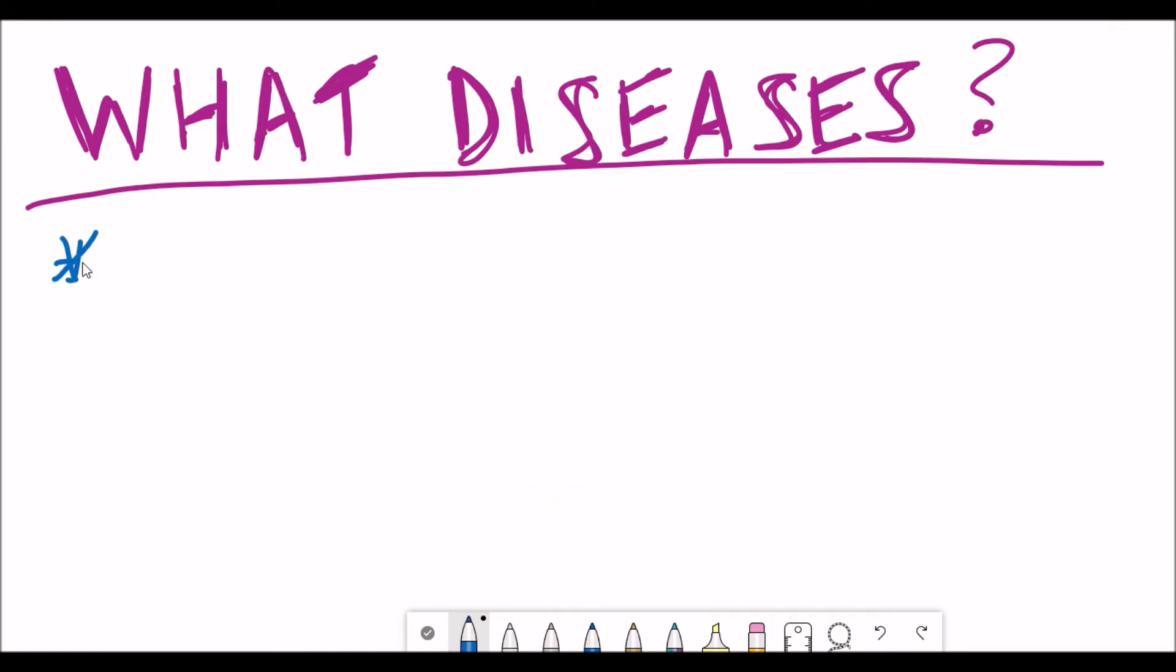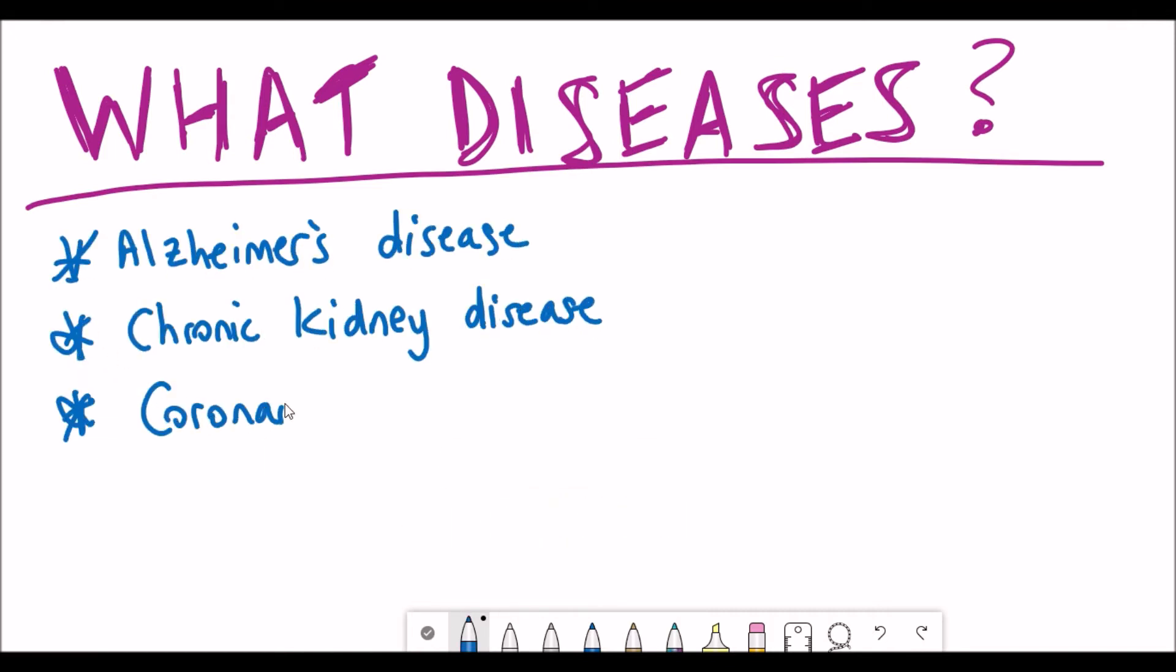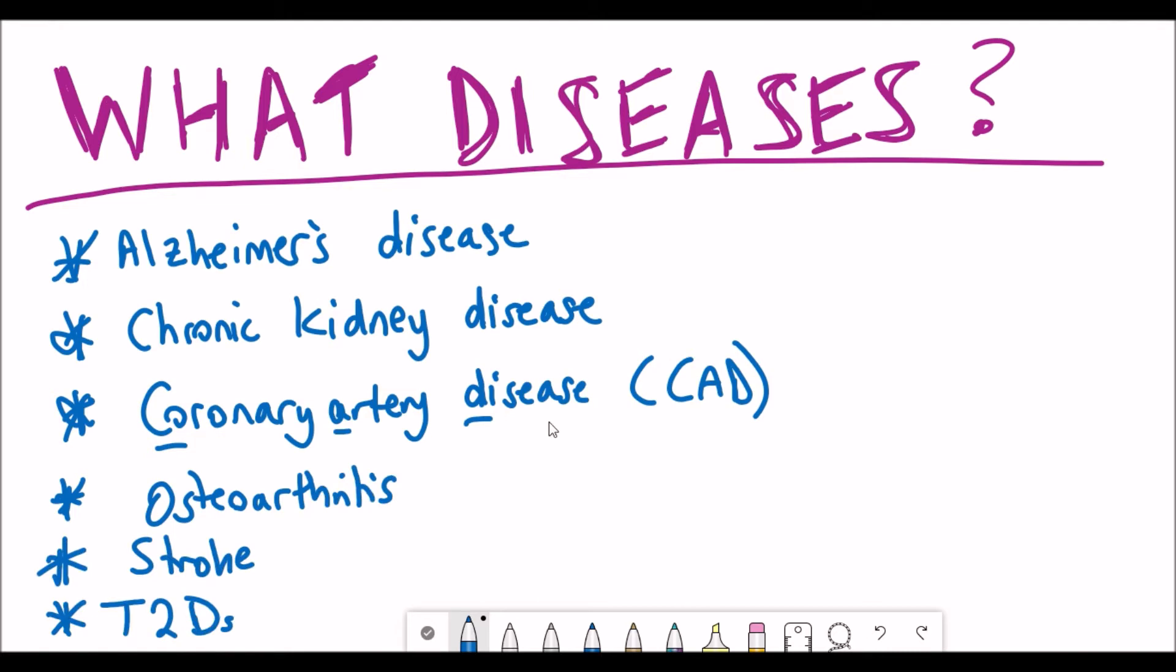So what I mean by this is that different age-associated diseases, such as Alzheimer's disease, chronic kidney disease, coronary artery disease, osteoarthritis, stroke, type 2 diabetes, and also two different cancer types, which are prostate and breast cancer, and colorectal cancer.